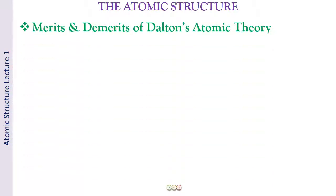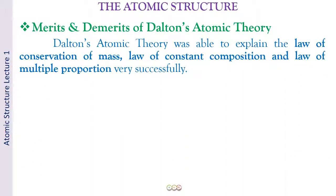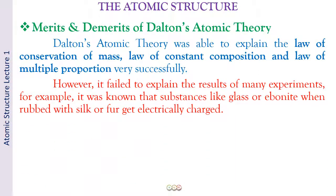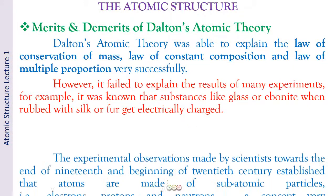Now, Dalton's atomic theory was able to explain the laws of chemical combination, like the law of conservation of mass, law of constant composition, law of multiple proportion, law of reciprocal proportion. He could not explain the law of gaseous volumes, which was given by Gay-Lussac. So we've already discussed all this. And one more thing, that it failed to explain the results of many experiments, especially what we are concerned in this course is that it was known that substances like glass or ebonite, when they are rubbed with silk or fur, they get electrically charged. So he could not explain things like this. So there were demerits, there were limitations of Dalton's atomic theory.